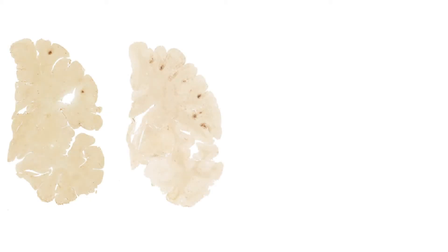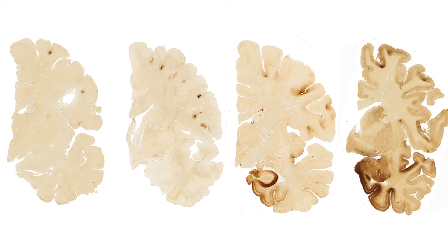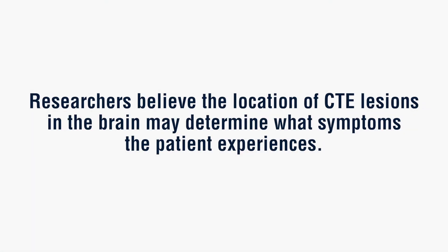When it gets more severe — and it gets more severe with aging — it tends to spread to other parts of the nervous system. It spreads to other parts of the gray matter, to the deep nuclei of the brain, the brain stem, and it can even spread to the spinal cord. Eventually it becomes quite a devastating disorder with abundant tau protein in many, many regions of the brain.